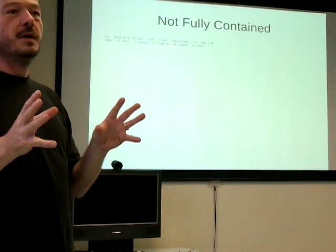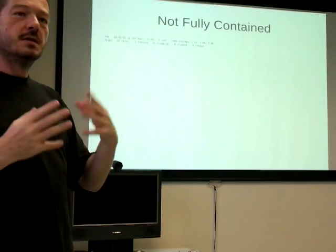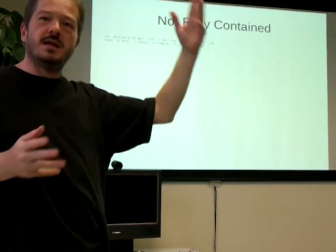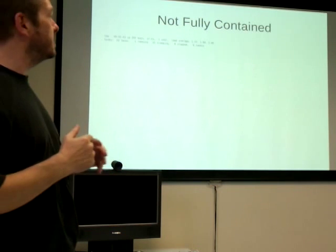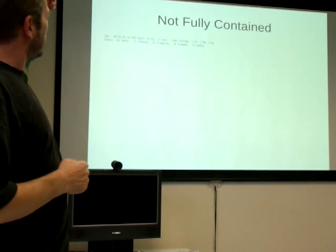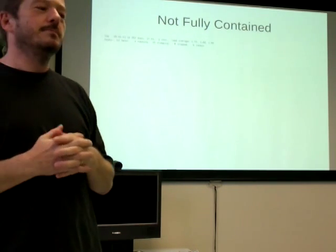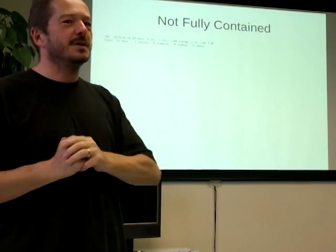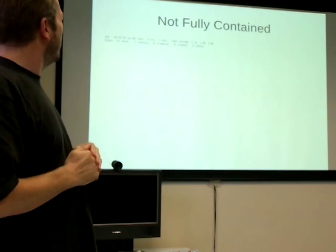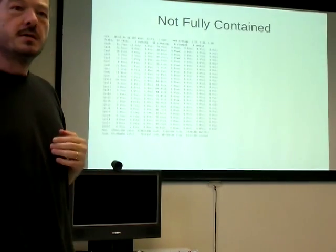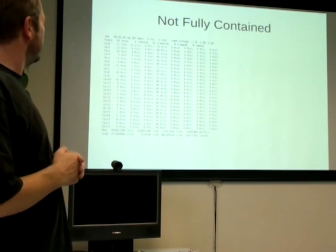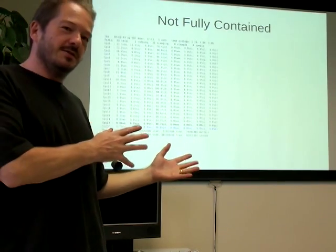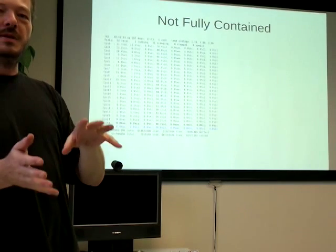If I log into the container and run top, it tells me I've got 22 tasks running. That sounds consistent with the process view inside the container. But it says it's been up for 297 days — it hasn't. And if I ask it to show me what all the CPUs are doing, it says there are 24 of them — because that's how many the host has got, and that's not how many have been allocated to the container. Likewise the memory — it says 64 gigabytes of memory available, but the container doesn't have that much; it's only got a few.